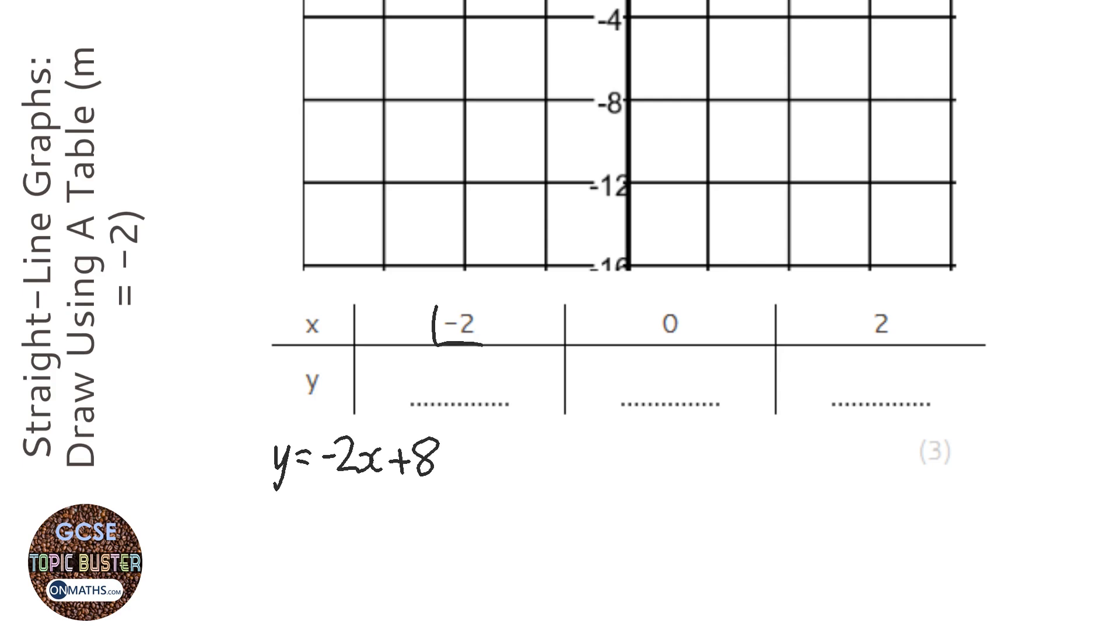We're going to do minus 2 first. So y equals minus 2 times minus 2 plus 8. Now two negatives times together is a positive, so that's 4 plus 8, which equals 12.